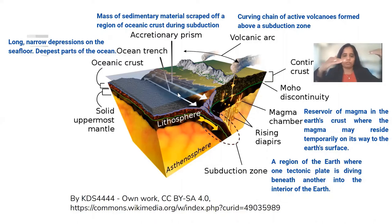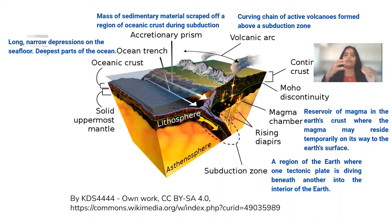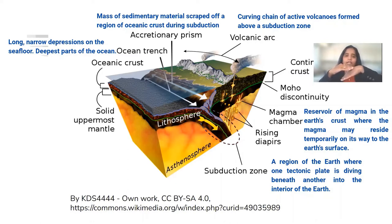When the oceanic plate is subducted below the continental plate, a rift is created — a trench is created. These oceanic trenches are usually the deepest parts of the ocean. They are the regions immediately above the subduction zone where the oceanic plate goes below the continental plate and a deep trench is formed. So we now know the subduction zone and oceanic trenches.